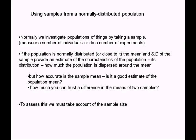Normally we deal with samples, because we can't know the characteristics of an entire population. If a population is normally distributed, then the mean and standard deviation of a sample provides an estimate of the population's characteristics. But we must consider how accurate our sample mean is as an estimate of the population mean — and whether two samples with different means are truly different or just reflect random sampling variation.